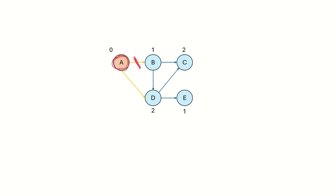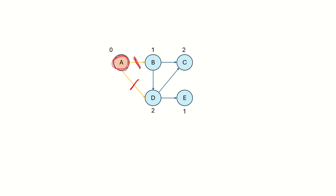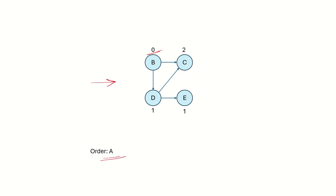We remove A from the graph and all its outgoing edges, so A comes first in our ordering. When we remove A and its outgoing edges, these edges were connected only to vertices B and D. So the in-degree of only these two vertices changes: B now has no incoming edge so its in-degree becomes 0, and D has only one incoming edge so its in-degree becomes 1.